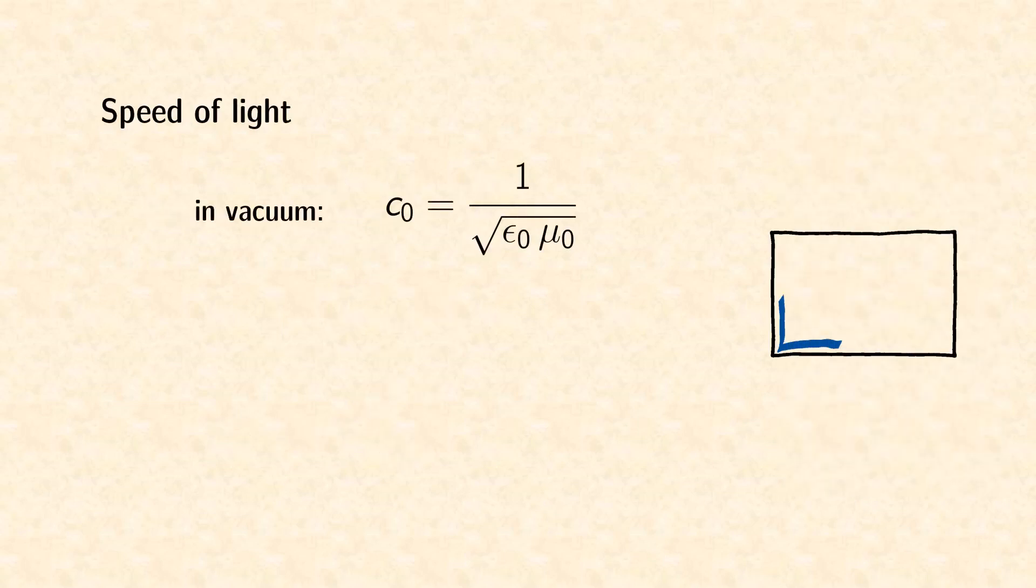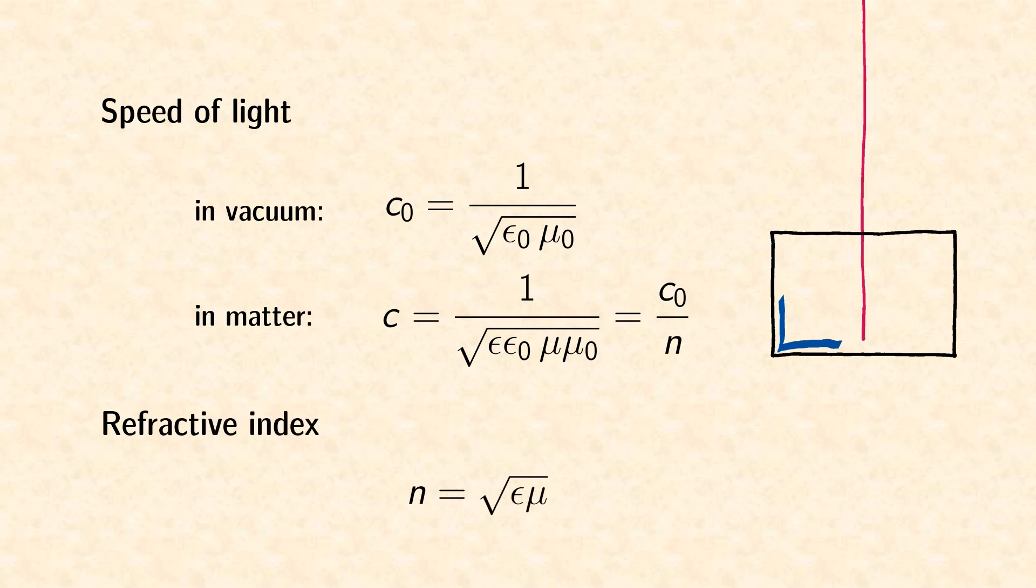In vacuum, the speed of light is given by the vacuum permittivity and vacuum permeability. We can easily expand this relation for the speed of light in matter, and we can simplify it by introducing the refractive index.